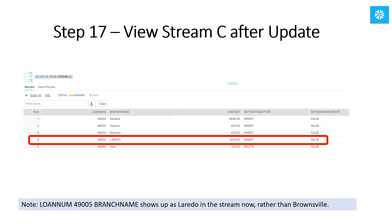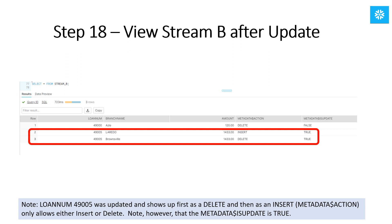However, that is not the case for stream B. Remember that we created stream B previously and then ran a delete statement for loan number 49000. So before we ran this most recent update, stream B had only one entry. When we updated Brownsville to Laredo, stream B picked up that change as an update, which is why we see true in the is_update column. However, there are two entries for the update: the first entry is where the old row is deleted, and the second entry is where the new branch name is recorded as an insert. That is because the metadata action can have only one of two values — insert or delete.